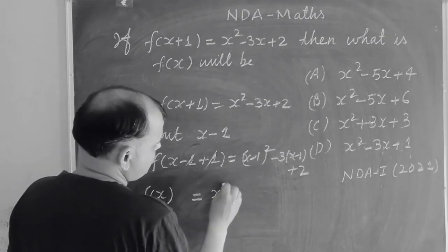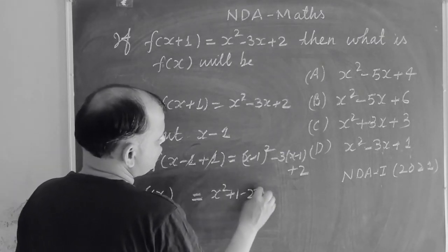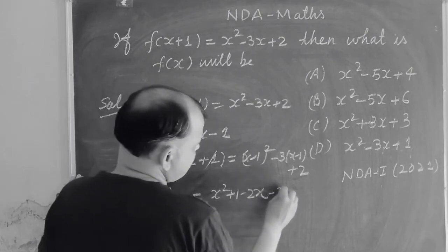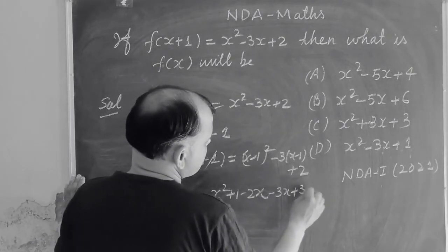This equals x² plus 1 minus 2x, which is the square of (x-1), then minus 3x plus 3 plus 2.